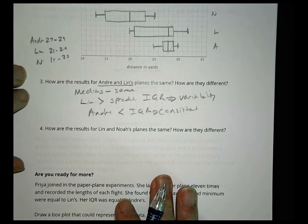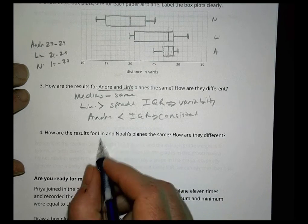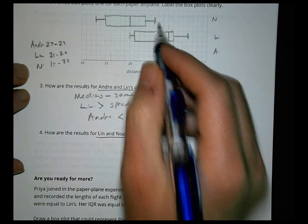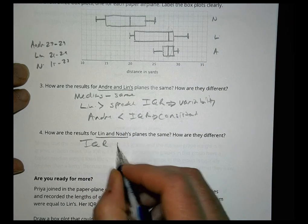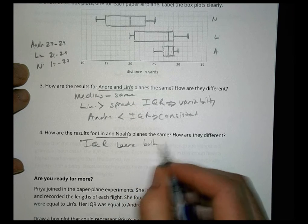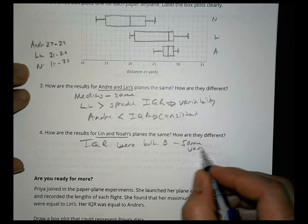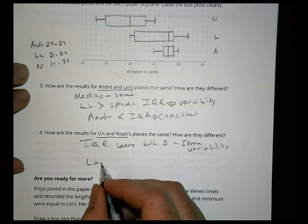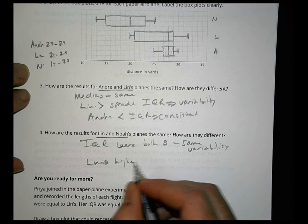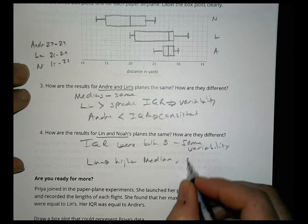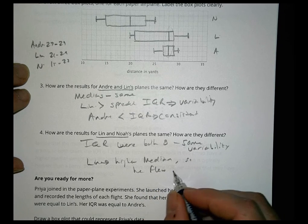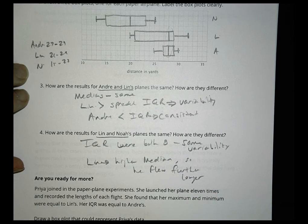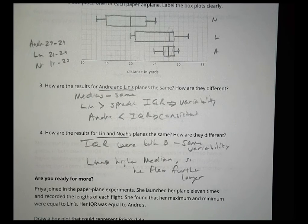So how are the results for Lynn and Noah's planes the same? Okay. Well, for Lynn and Noah, we could see, and the graph here we can't see, but back in the table, we know that their IQRs were both eight. So he had the same variability there, right? But Lynn had a higher median, so he flew further or longer, I should say, than Noah did most of the times. Noah's went a lot less.